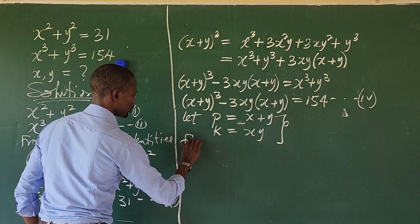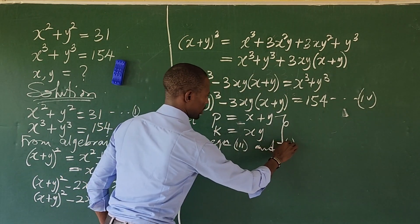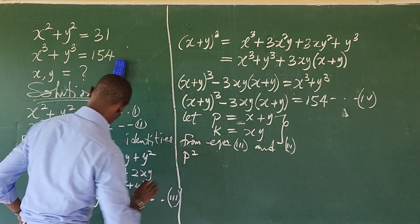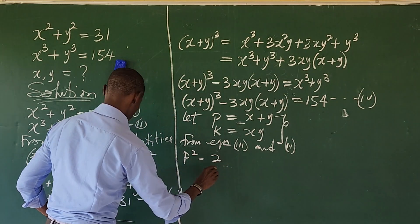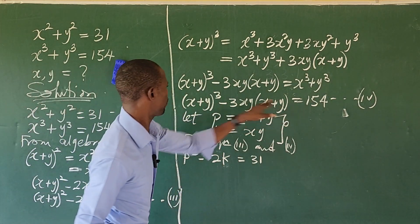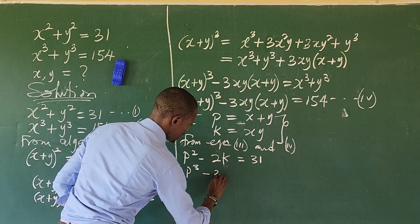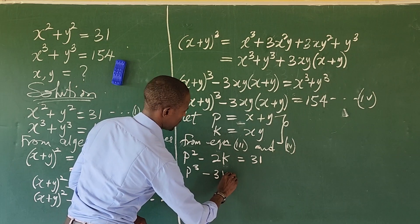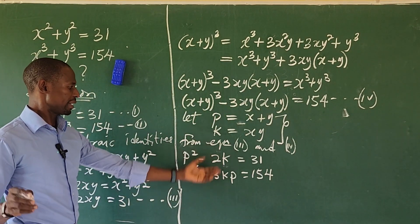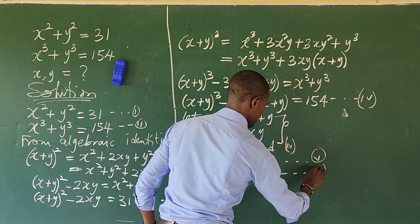Applying the substitution to equations 3 and 4, we get: P² minus 2K equals 31, which we call equation 5, and P³ minus 3KP equals 154, which we call equation 6. We now solve equations 5 and 6 simultaneously.